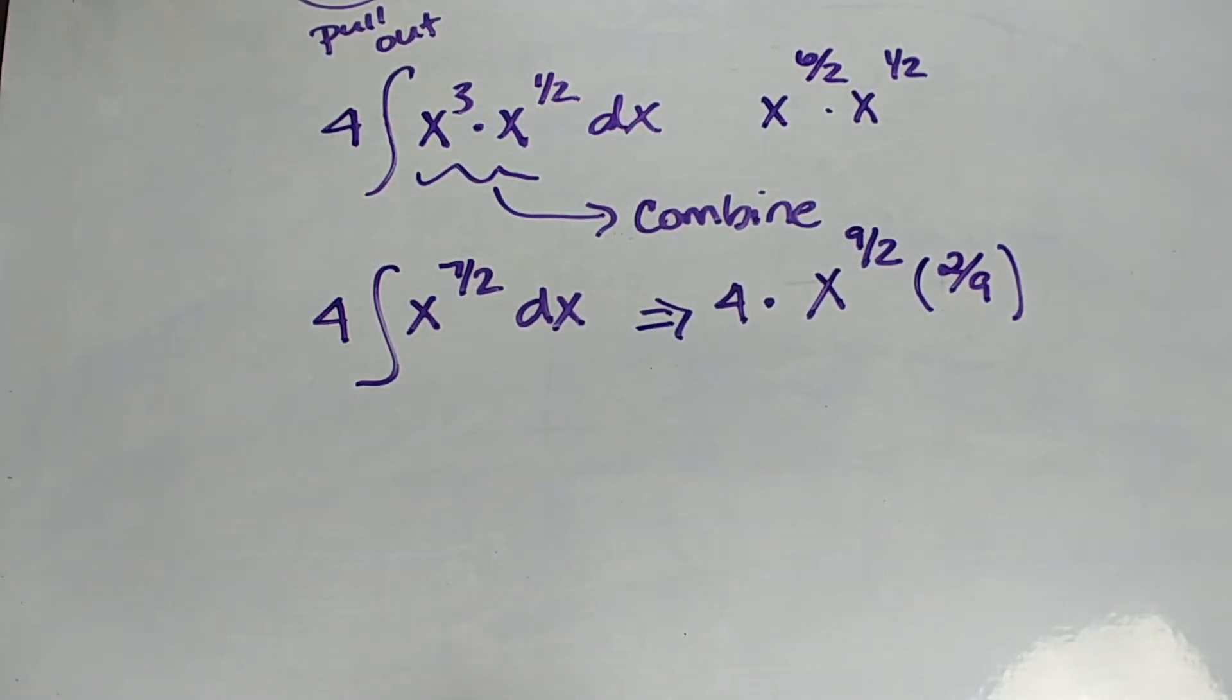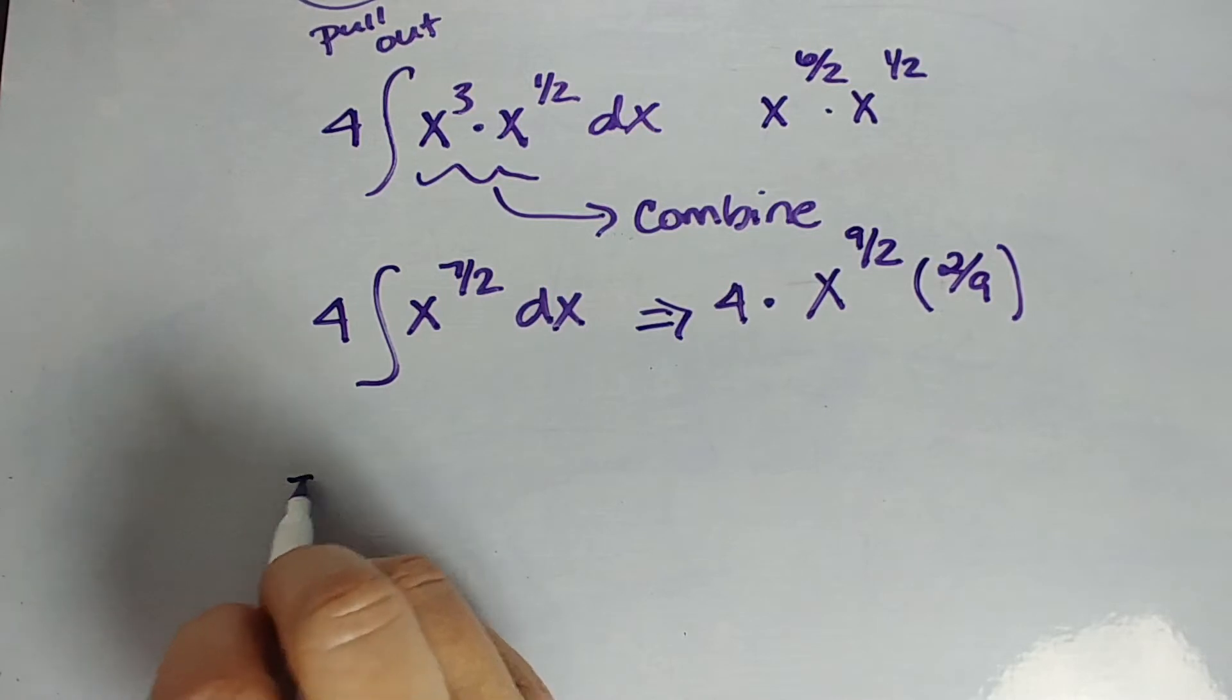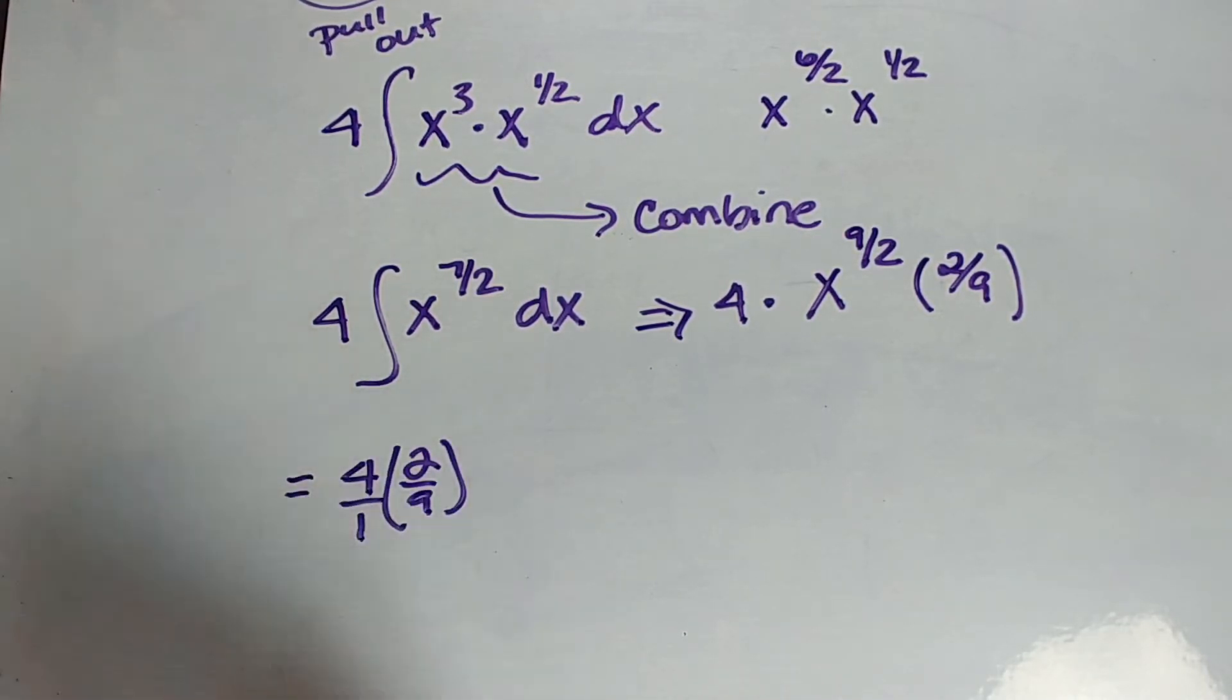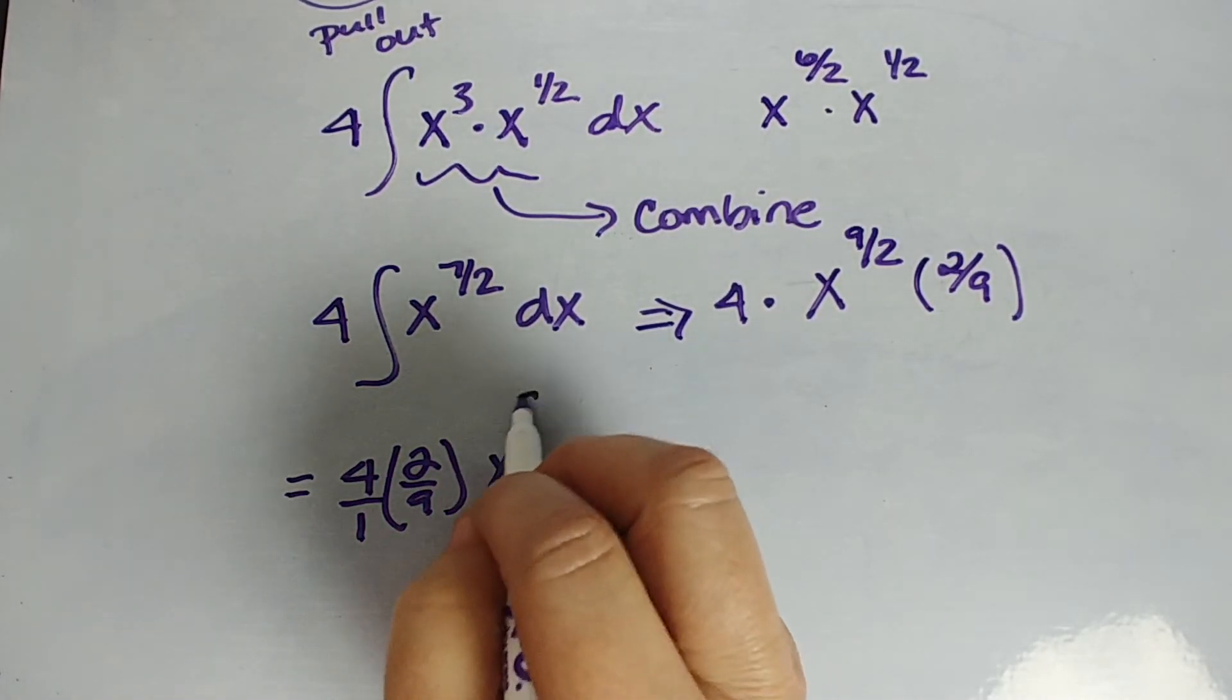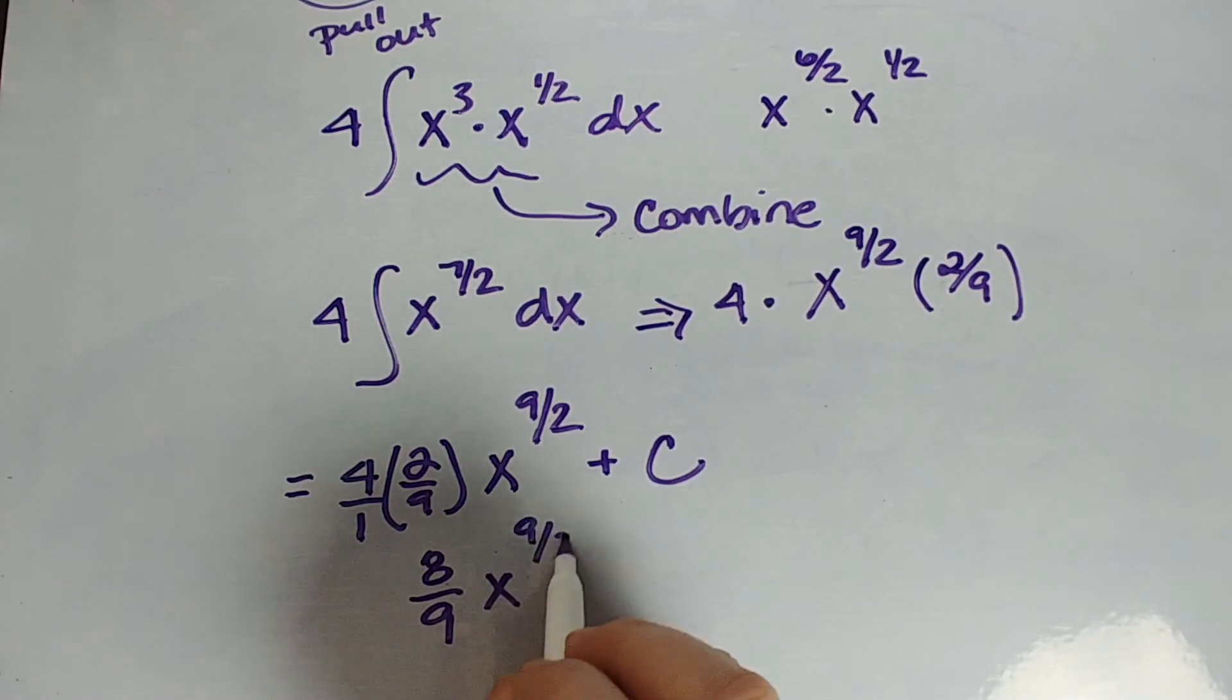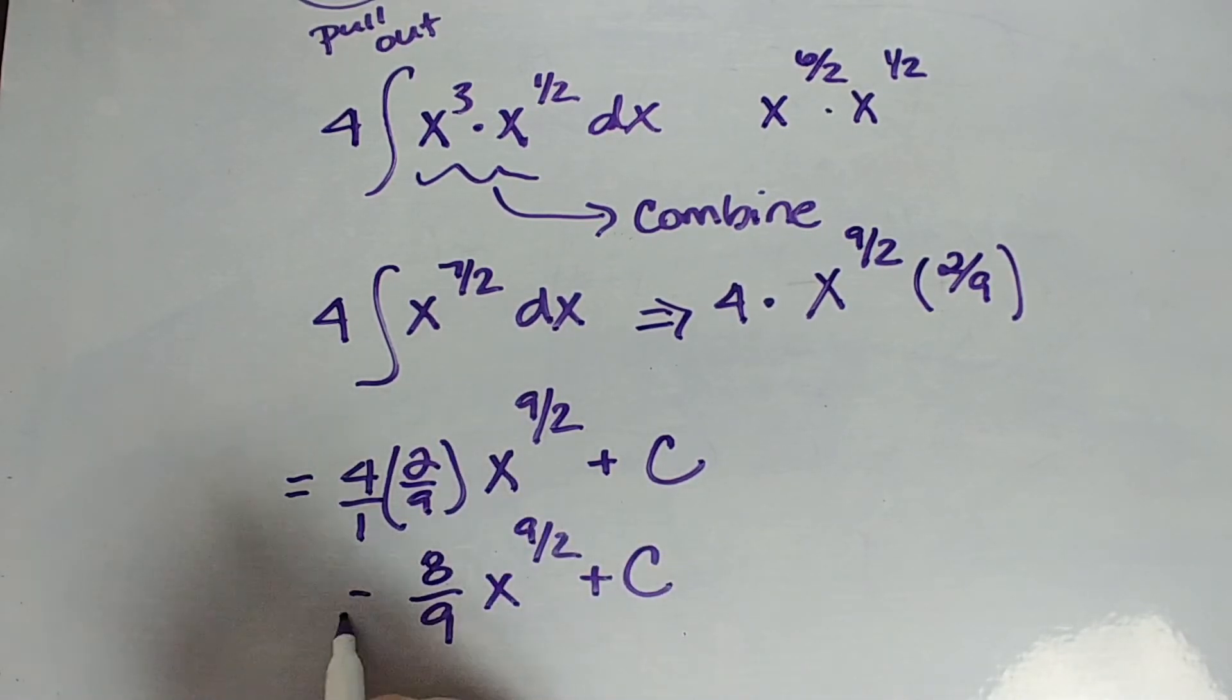So let's clean this all up down here. We're going to say this equals four times two ninths. Maybe we put four over one so you don't make some basic mistake. x to the nine halves. And then we have a plus C of course, but let's clean this up. Let's not leave this, four over one times two ninths is simply eight ninths x to the nine halves plus C. That's it. We're done.